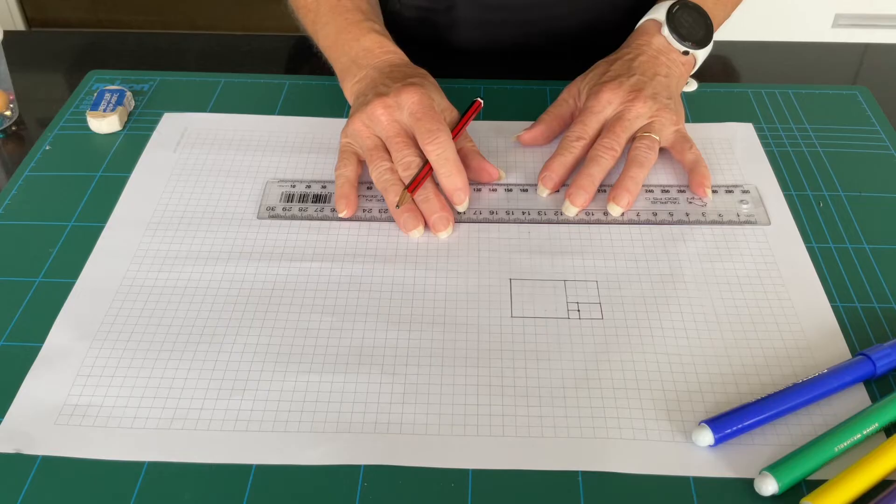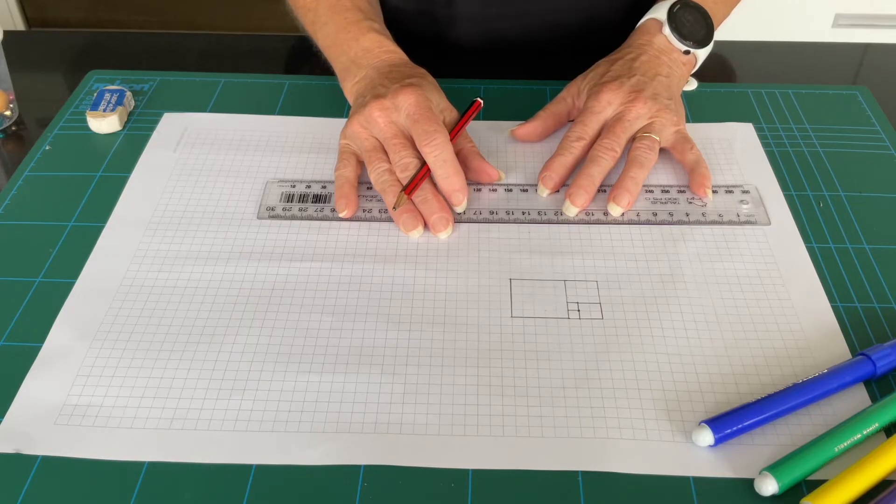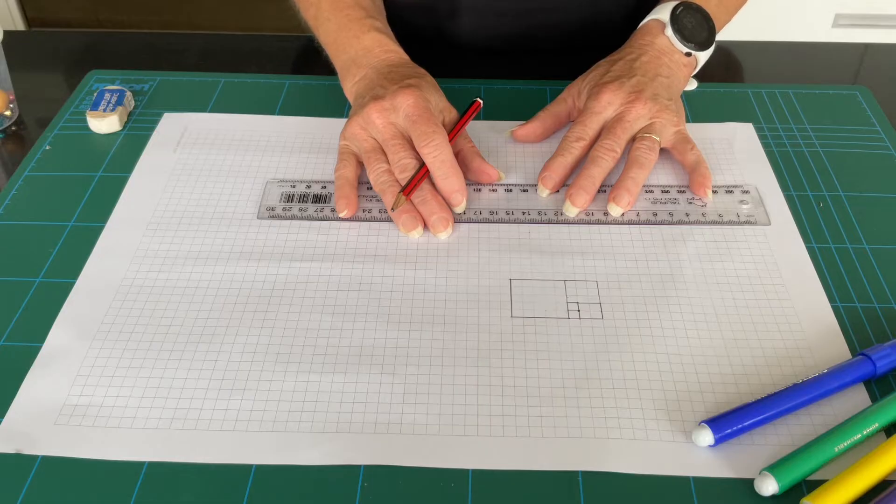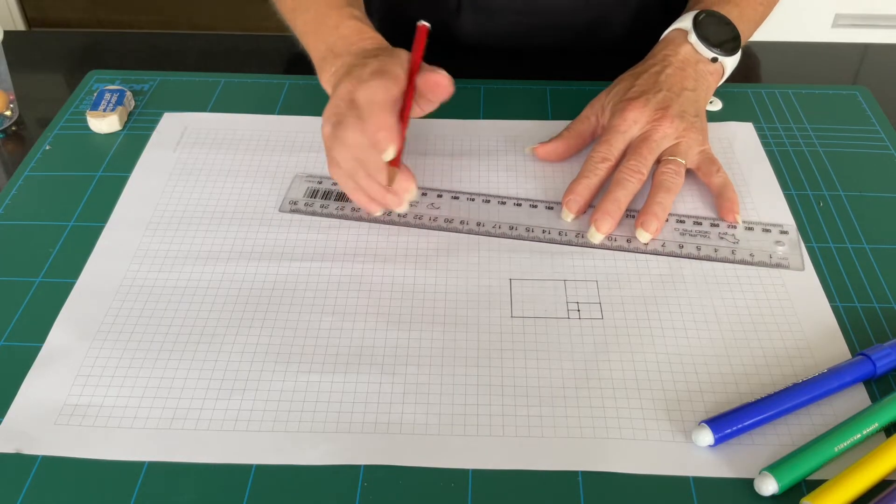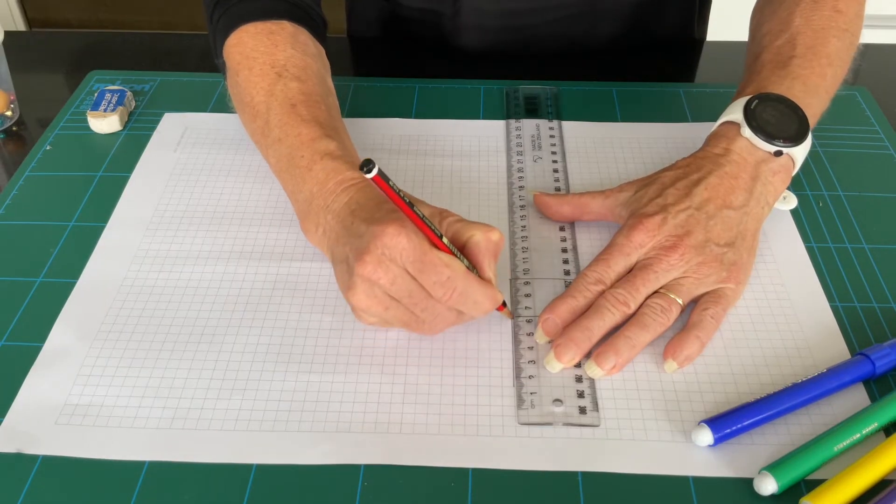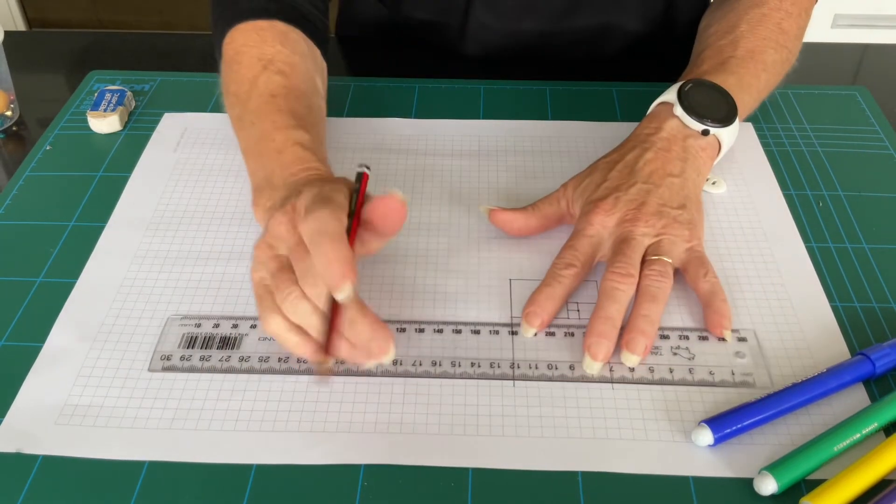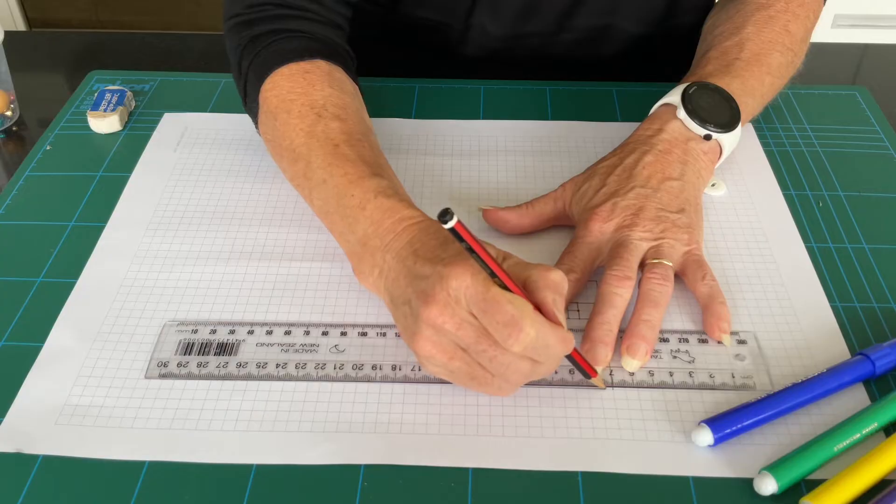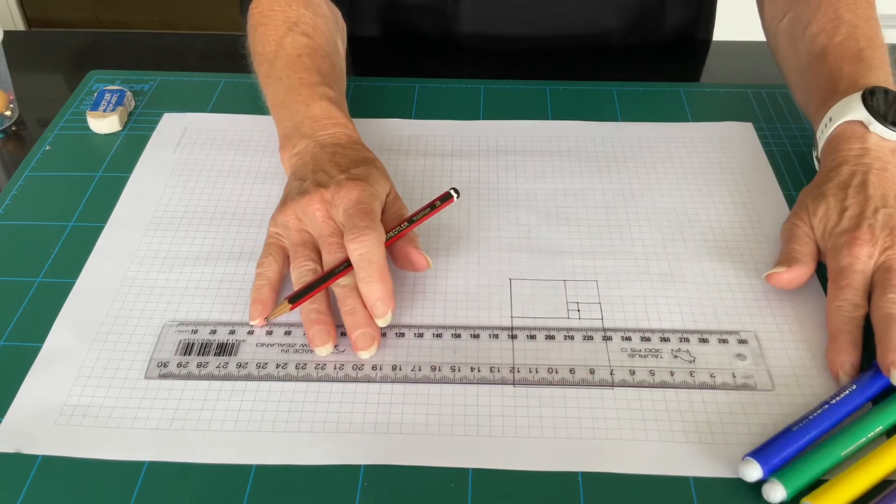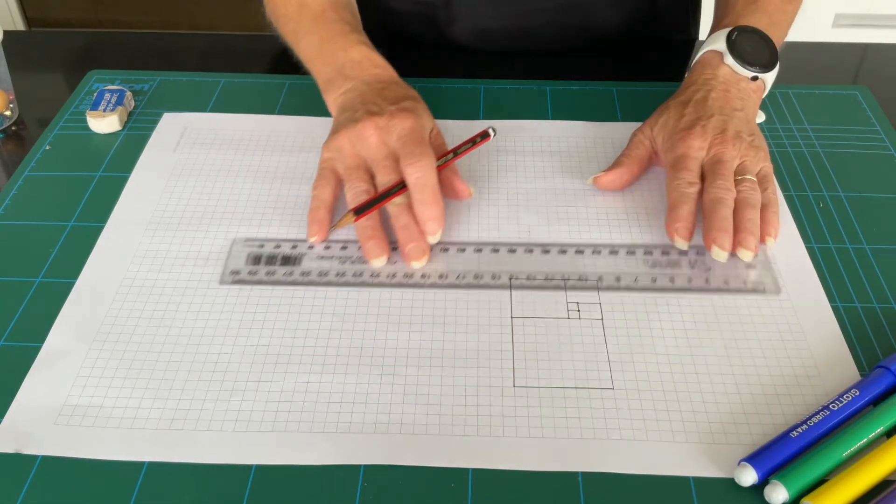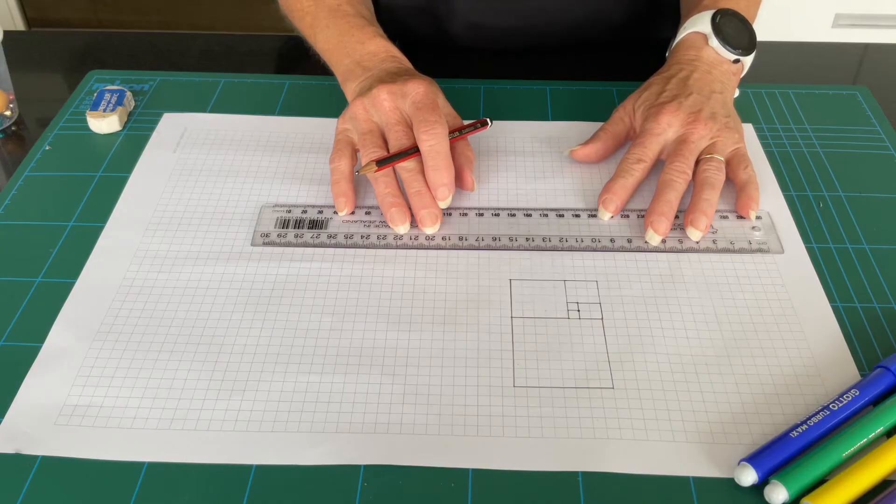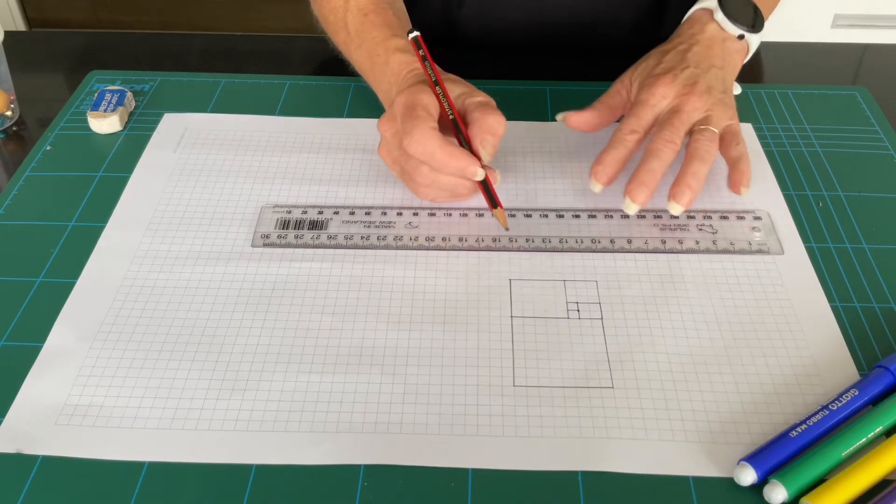The next number in the sequence is 8. Draw this immediately below the rectangle that you have. The next number in the sequence is 13. Draw this to the right of the rectangle that you have.